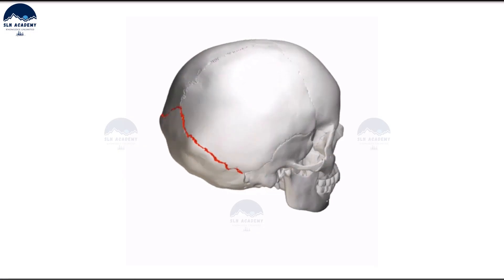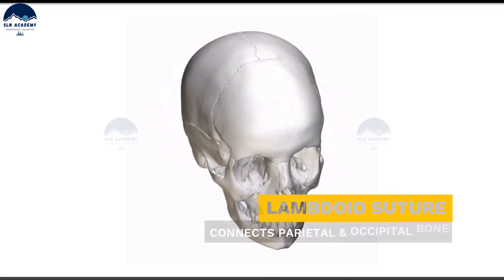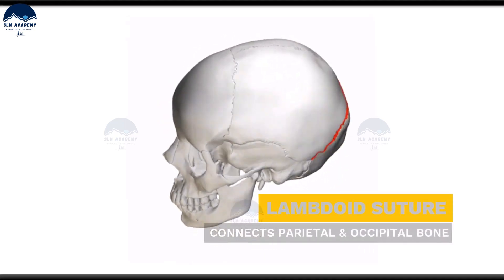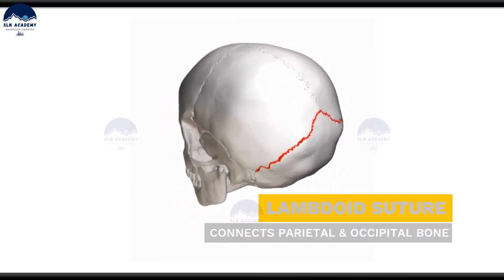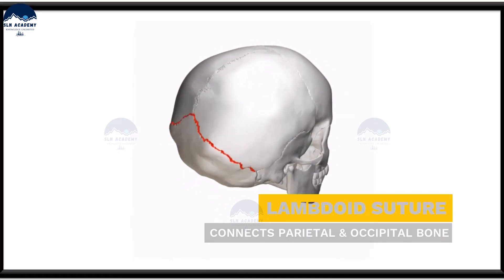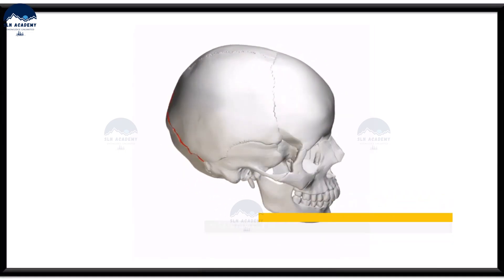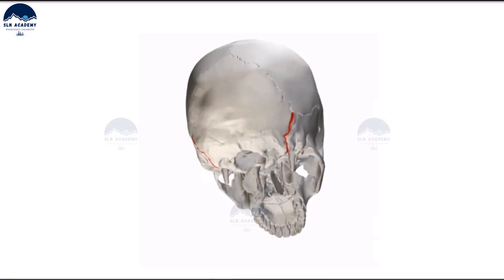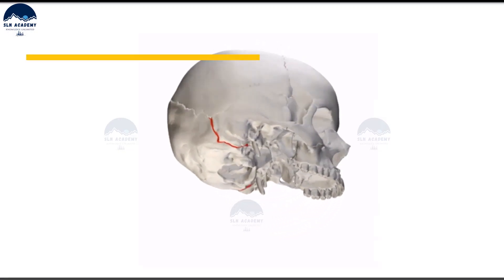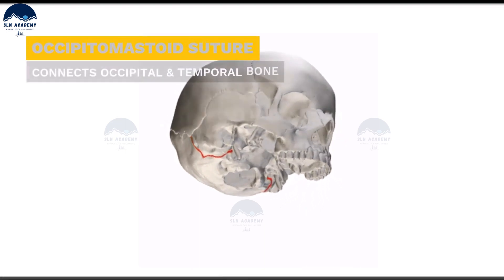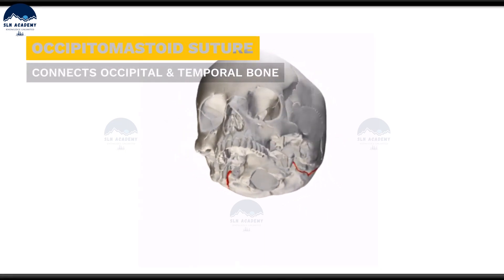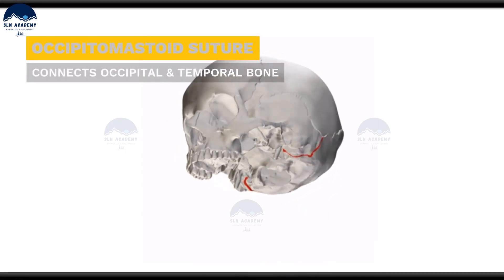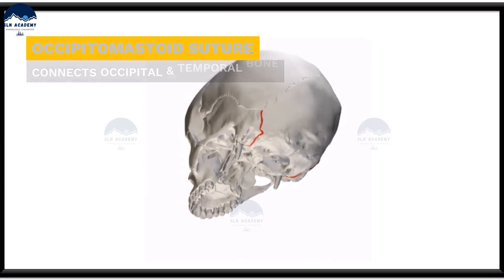The lambdoid suture connects the two parietal bones with the occipital bone. It is named the lambdoid suture as it has an uppercase lambda-like shape. The occipitomastoid suture connects the occipital and temporal bones and continues with the lambdoid suture.